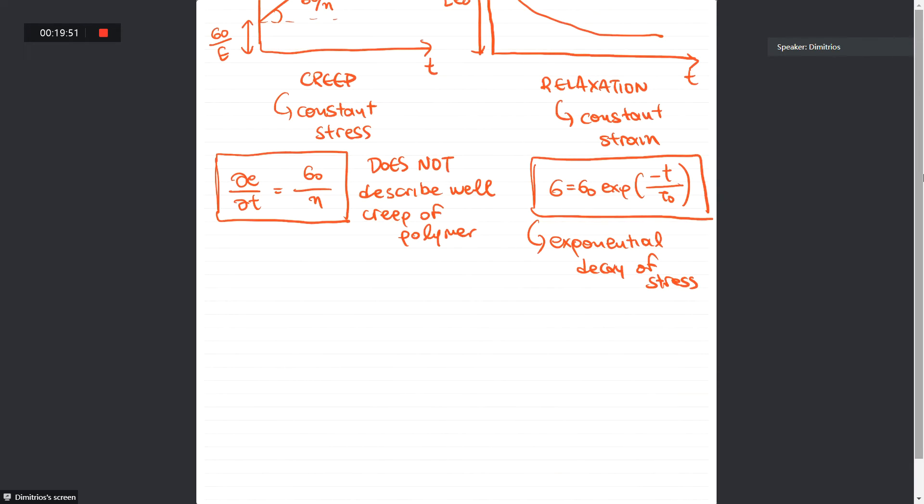And finally, the Maxwell model is given. We said that viscoelastic models are using combinations of springs and dashpots. So in this case, the Maxwell viscoelastic model is a combination of a spring and dashpot in series.